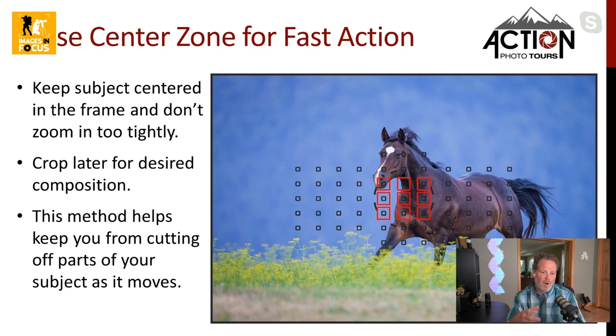If you use too large a zone, especially with cameras that have AI technology, those systems are designed to detect motion. If the background puffin were to raise its wings, the focus could suddenly jump from the foreground puffin to the background one. You have to understand what the camera is thinking and be smarter than it — set your focus zone appropriately. Your camera doesn't think, it just does what it's programmed to do. Learn how the camera operates, predict its behavior, and take advantage of its strengths while accounting for its limitations. Use the center zone for fast action, keep your subject centered in the frame, don't crop in too tightly, and crop later for your desired composition.